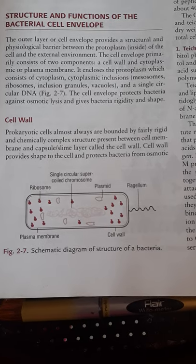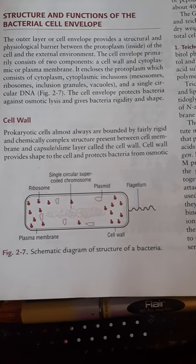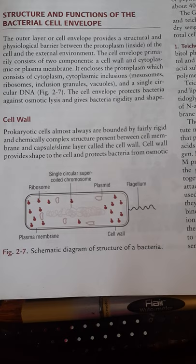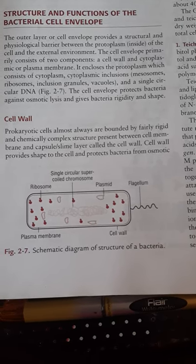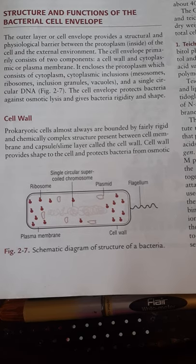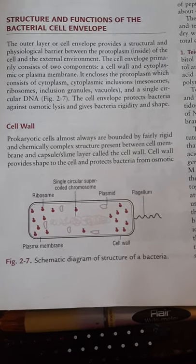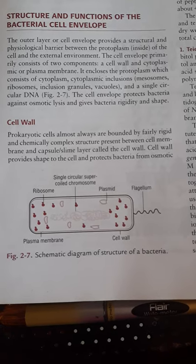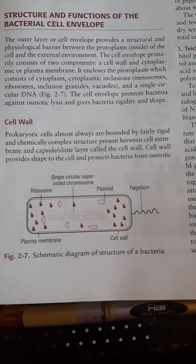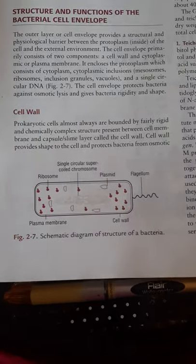The bacterial cell's outermost layer is called the cell envelope. The cell envelope acts as a barrier between the cell's internal environment and external environment. It is made up of two things: cell wall and plasma membrane.